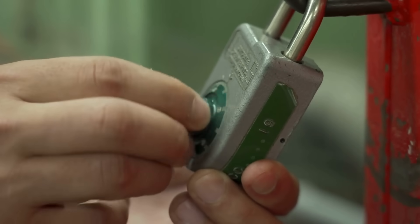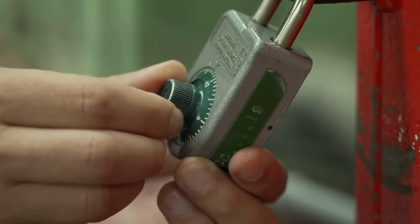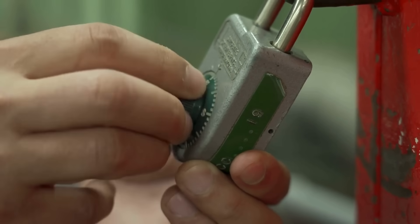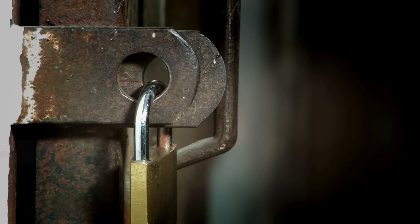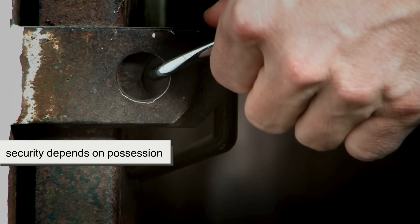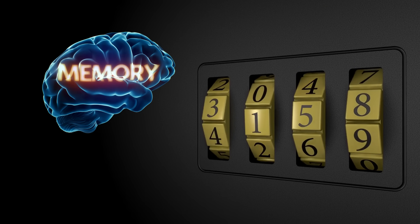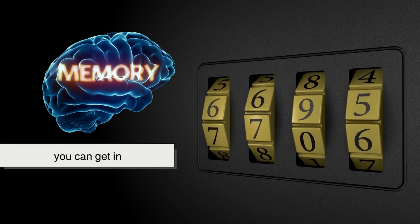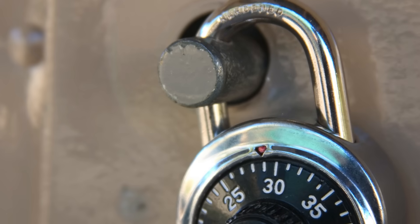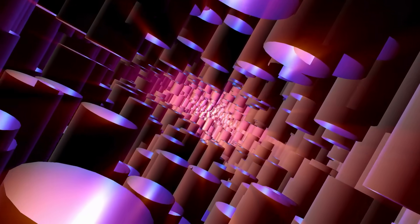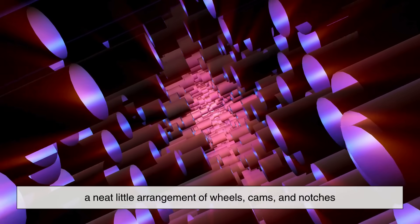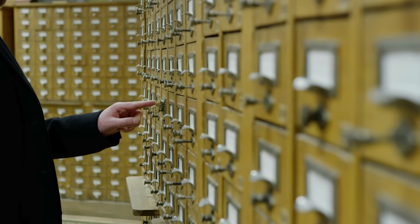Combination locks are everywhere because they solve a basic problem—how to secure something without relying on a key. With a regular padlock, security depends on possession. You either have the key or you don't. With a combination lock, it's about knowledge. If you know the correct numbers and sequence, you can get in. If you don't, you're out. It sounds simple, but to make that idea work mechanically requires a neat little arrangement of wheels, cams, and notches that respond to your hand on the dial or your fingers on the wheels.